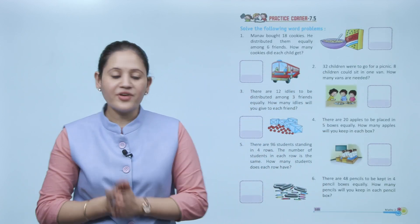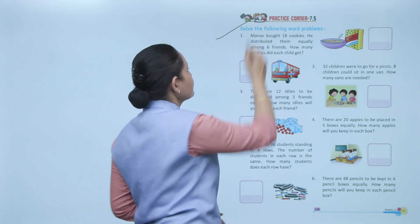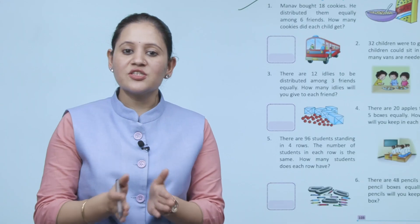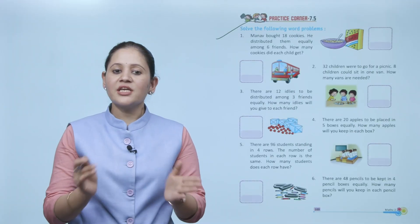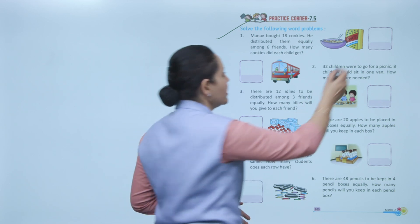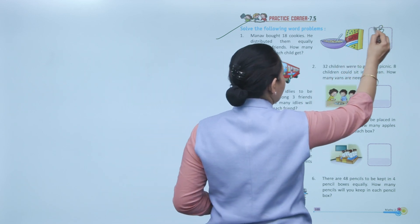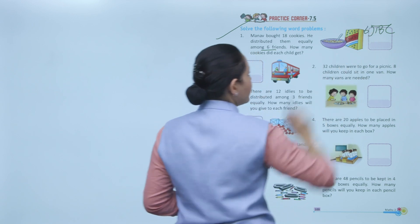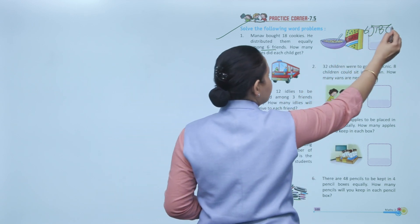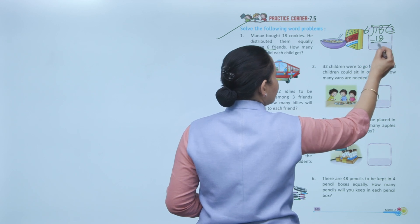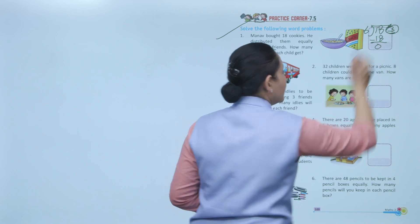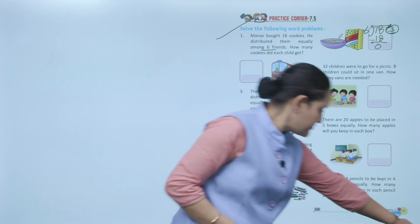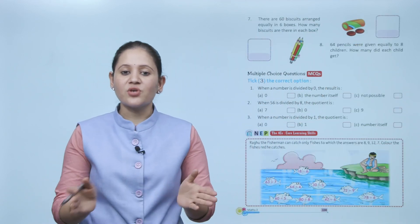Practice corner 7.5 — word problem: Mana bought 18 cookies and distributed them equally among 6 friends. Total cookies = 18, divided by 6 friends. 6 threes are 18, so each friend gets 3 cookies.